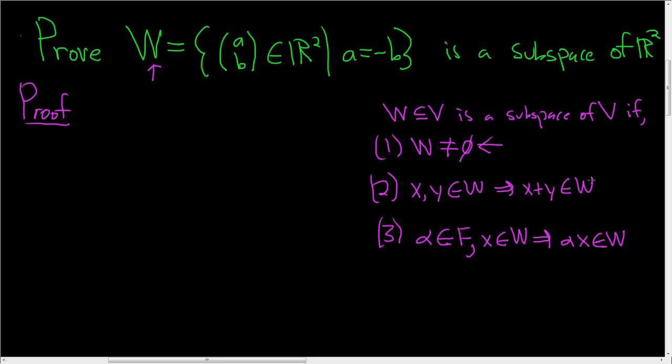So it's non-empty, it's closed under vector addition, and it's closed under scalar multiplication. All right, so let's go ahead and do this proof. And as we do it, I'll number the steps.